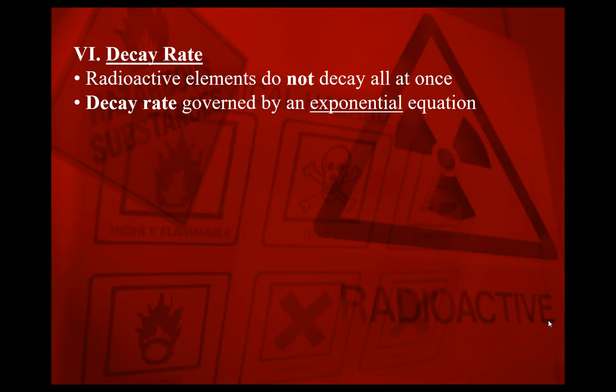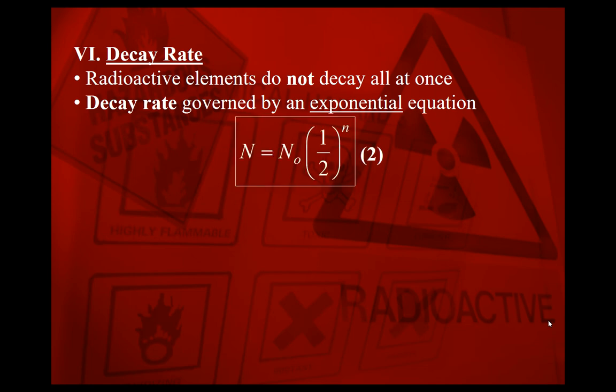We refer to this as the decay rate — the rate at which your parent isotope turns into a daughter isotope — and it's governed by an exponential equation. You have N is equal to N₀ multiplied by one-half to the power of little n, and that equation can be found on your formula sheet.